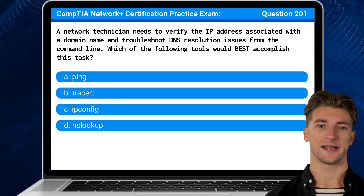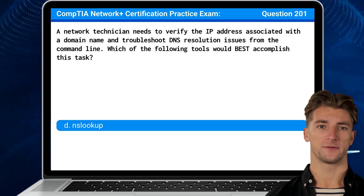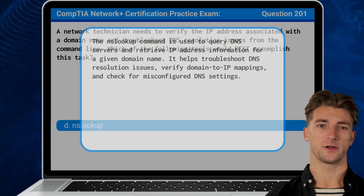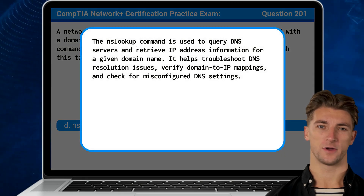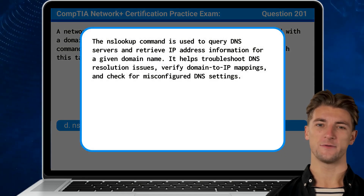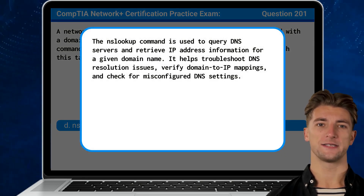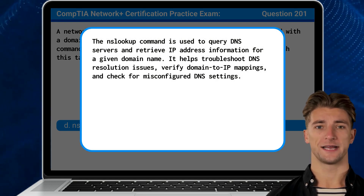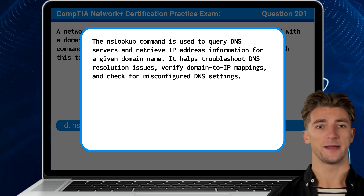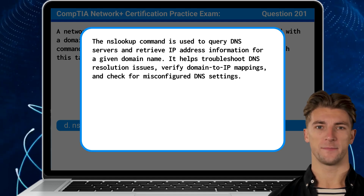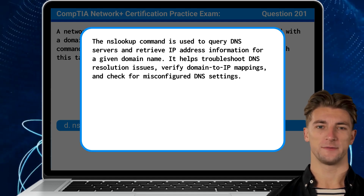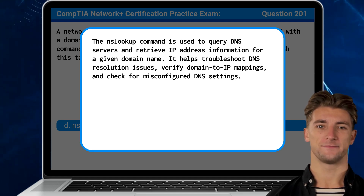The answer is D: NSLookup. The NSLookup command is used to query DNS servers and retrieve IP address information for a given domain name. It helps troubleshoot DNS resolution issues, verify domain to IP mappings, and check for misconfigured DNS settings.